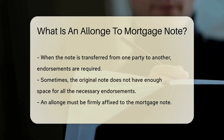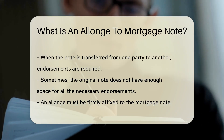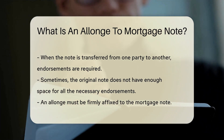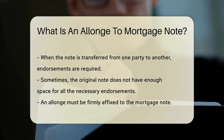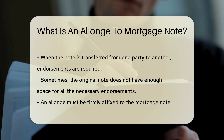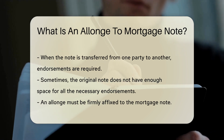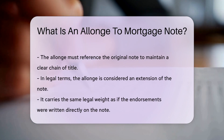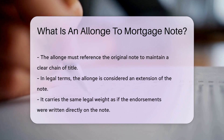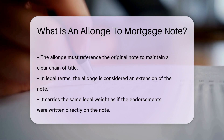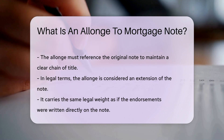The allonge must be firmly affixed to the mortgage note, ensuring it is considered part of the original document. The allonge must also reference the original note to maintain a clear chain of title. In legal terms, the allonge is considered an extension of the note and carries the same legal weight as if the endorsements were written directly on the note.